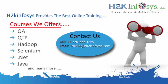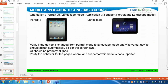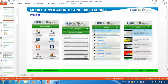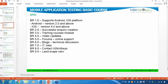Let me show you what landscape mode looks like. This is your landscape mode — your screen size changes when you tilt the mobile horizontally. The requirement says that if a user wants to connect with the H2K team, they can use normal portrait mode or landscape mode. Whether the customer is in portrait or landscape, the application should work. These are all the requirements we need to test for both Android and iOS platforms.